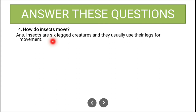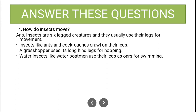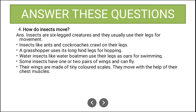Fourth long answer: How do insects move? Insects are six-legged creatures and usually use their legs for movement. Insects like ants and cockroaches crawl on their legs, while grasshoppers use their long hind legs for hopping. Water insects like the water boatman use their legs as oars for swimming. Some insects have one or two pairs of wings and can fly — their wings are made up of tiny colored scales and they move with the help of their chest muscles.